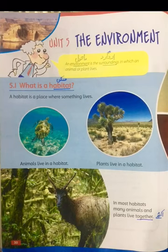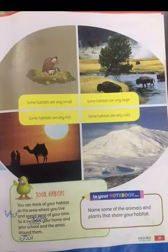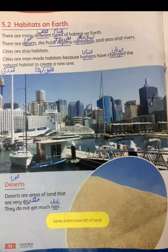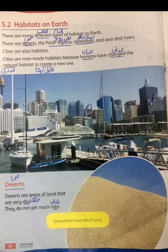In our previous lecture we read about habitat and habitats on earth. Let's revise our previous lecture. What is a habitat? A habitat is a place where living organisms live — where proper light, air, water, and shelter are provided. You have some habitats that are very small and large, and cold.